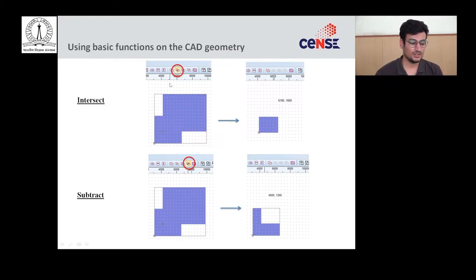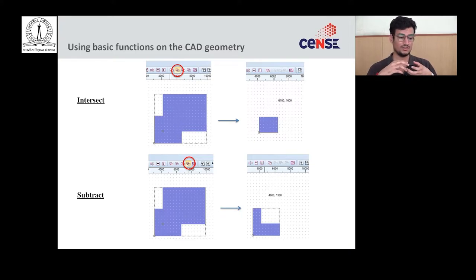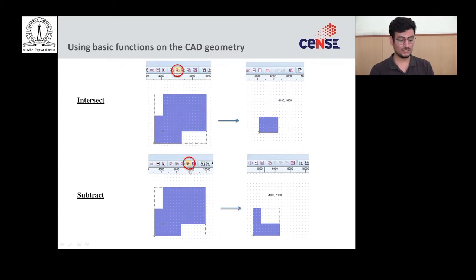There are more important functions to keep in mind. The intersect option: if two designs overlap, applying intersect gives you only the common part of those two geometries. The subtract option: for example, if I draw a small square and then a bigger square over it and apply subtract, I receive the bigger shape with the smaller shape cut out of it.